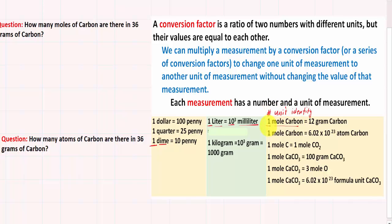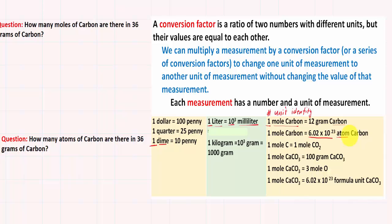Looking at this conversion factor: one mole of carbon is equal to 12 grams of carbon. Notice how 12 is a number, the unit is gram, and the identity of the substance is carbon. And here we have one mole of carbon is equal to 6.02 times 10 to the 23rd atoms of carbon. We have a very large number, and then we have another unit called atom. Isn't atom the simplest form of matter? But why does it function as a unit? That's what makes chemistry complicated — a term that defines a substance now functions as a unit.